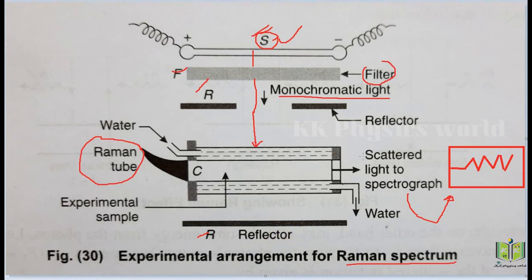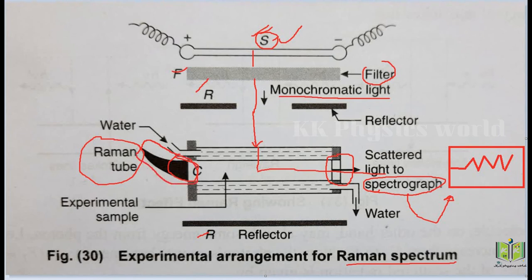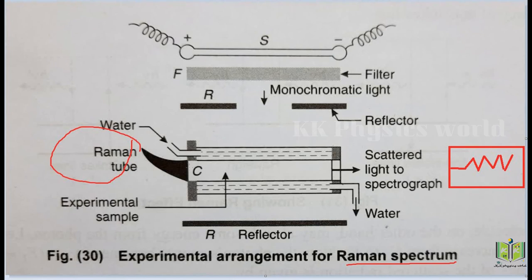The Raman tube has two ends. At one end there is a flat glass plate, which allows the scattered light to emerge toward the spectrograph. The other end is horn-shaped, which provides a black background to the experiment. The Raman tube has a diameter of 1–2 cm and a length of 10–15 cm, and is surrounded by a water jacket to prevent overheating.